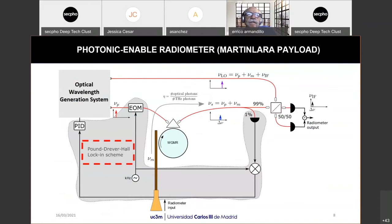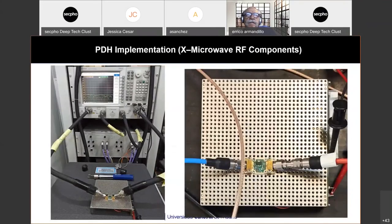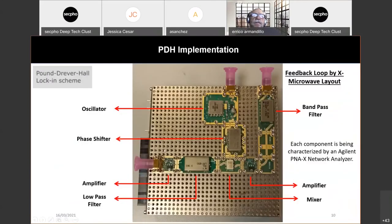Now, last but not least, we have the pound-driven hole locking scheme. This PDH loop is being implemented with RF component from X-microwave, which offers modular building blocks for RF and microwave systems. Here we can see some pictures of us testing the amplifier. They all have a very nice behavior. The final size of the PDH loop with this kind of component are 11 millimeter by 8 millimeter. It's very, very small. So, that's what I was going to present today. Thank you so much for your attention.